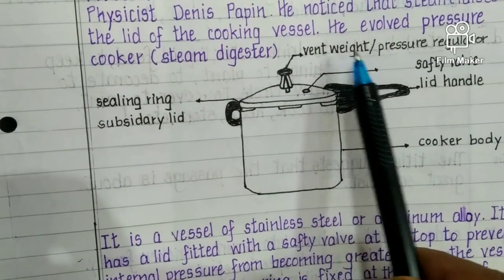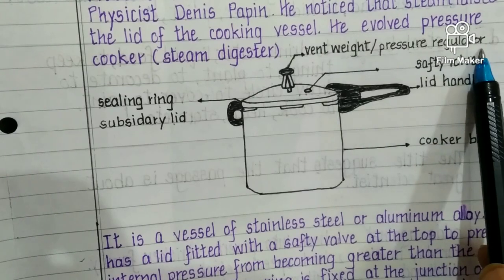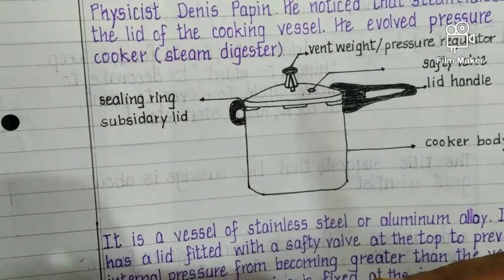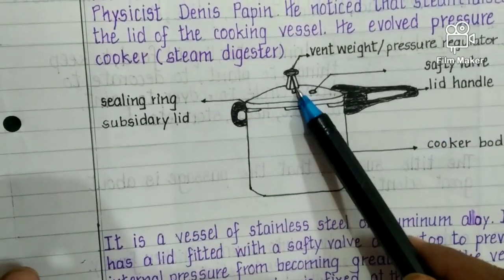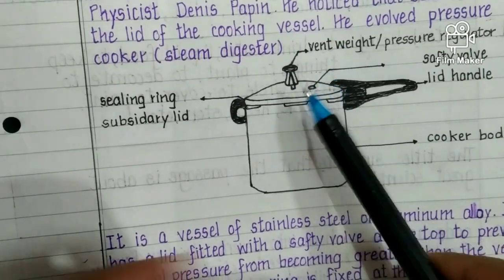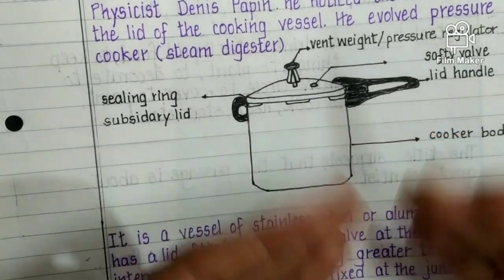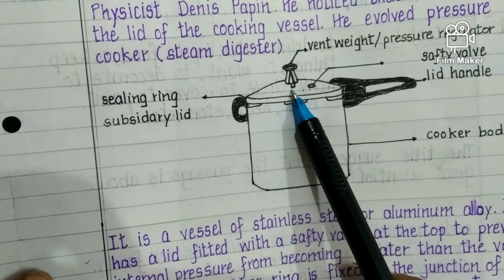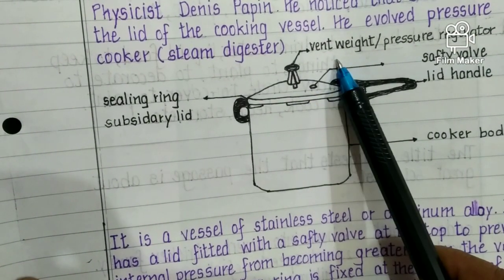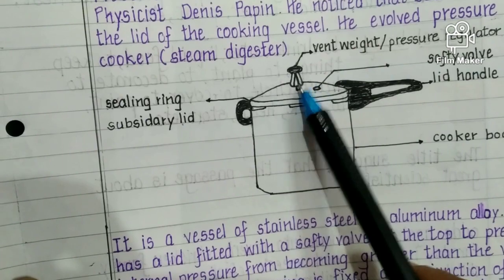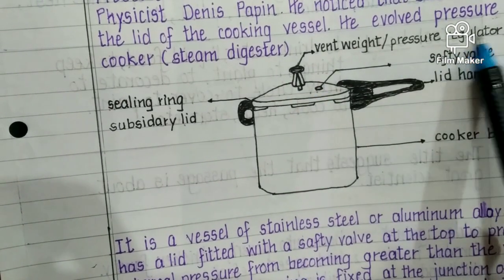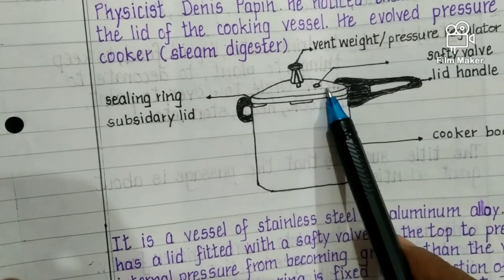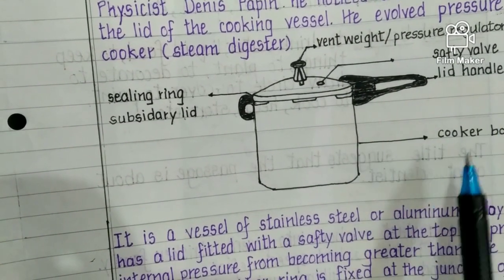Here I have given the diagram of the pressure cooker, which includes: a sealing ring, subsidiary lid, vent weight, pressure regulator, safety valve, lid handle, and cooker body. The vent is a small opening from which steam escapes, and the vent weight (weight on top) regulates the pressure.